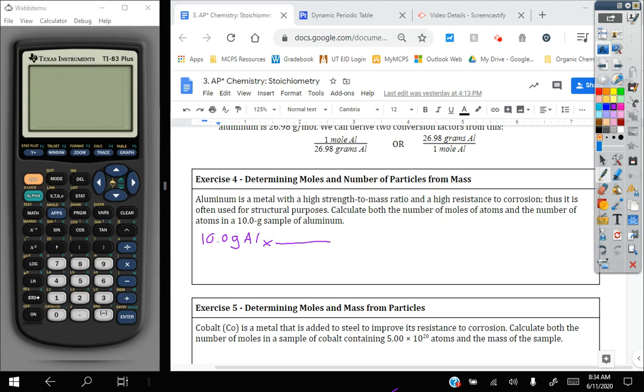If we want grams to cancel, we want grams on the bottom. So we're going to put in our molar mass here, 26.98 grams of aluminum, and then we're left in moles of aluminum on top. So that first conversion factor will get us our moles of aluminum, and then the second one will get the number of atoms. If we check our units, grams of aluminum will cancel out here and we'll be left in moles of aluminum up top for that first conversion factor.